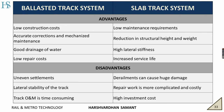Comparison between ballasted track system and slab track system. Advantages of the ballasted system: less construction costs — initial investment is less. Then accurate correction and mechanized maintenance. Good drainage of water due to ballast, and low repair and maintenance costs. There is also reduction in structural height and weight, high lateral stiffness, and increased service life because wear and tear is less. Disadvantages of slab track: uneven settlements, lateral stability of track, and track operation and maintenance is time-consuming. We require frequent maintenance blocks and the time of those blocks is too long.